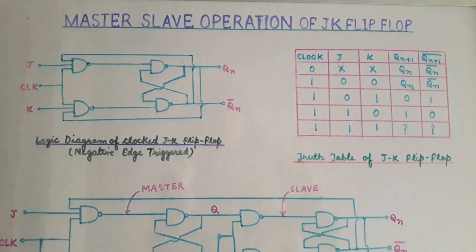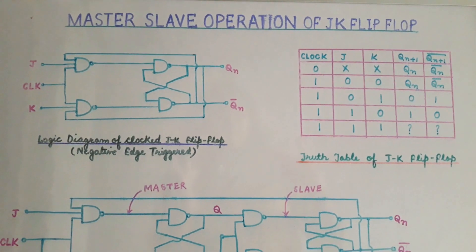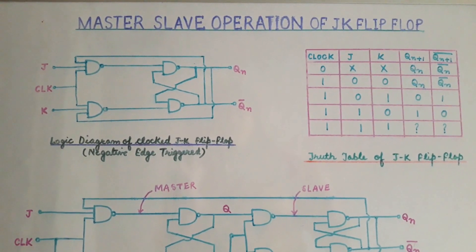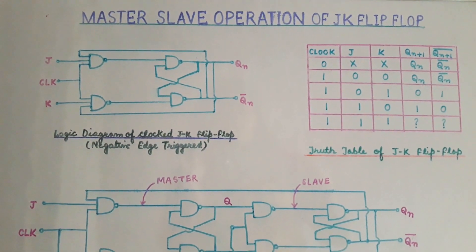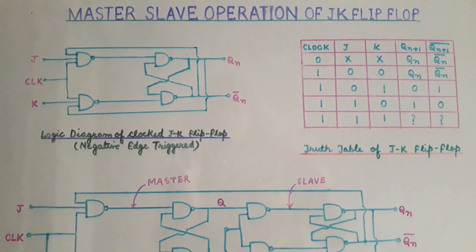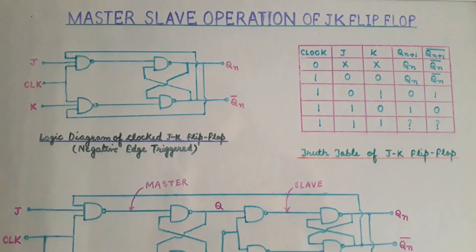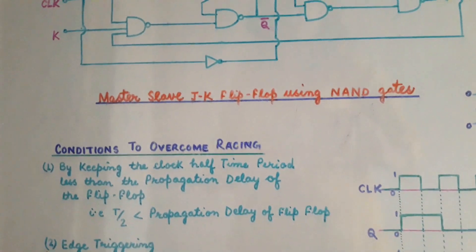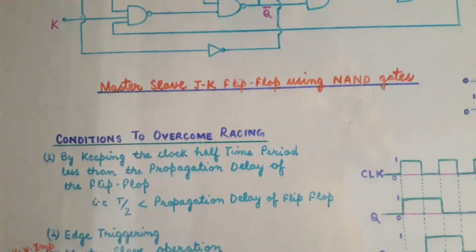This continuous changing is what we call racing or the race-around condition, which is observed in JK flip-flop. Racing is not a desired output because we cannot predict the output. Instead of racing we use toggling. There is a difference between racing and toggling — racing is an uncontrolled phenomenon whereas toggling is a controlled phenomenon. The first method to overcome racing is to keep the clock half-time period less than the propagation delay of the flip-flop.